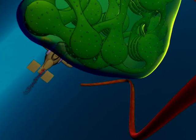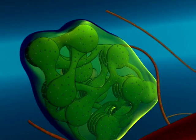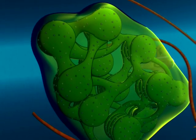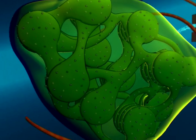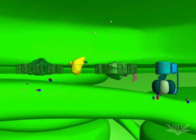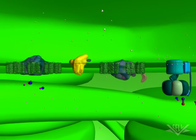Finally, we see an organelle only found within plant cells. This is the chloroplast. Here, light energy from the sun is converted into chemical energy in the form of ATP.